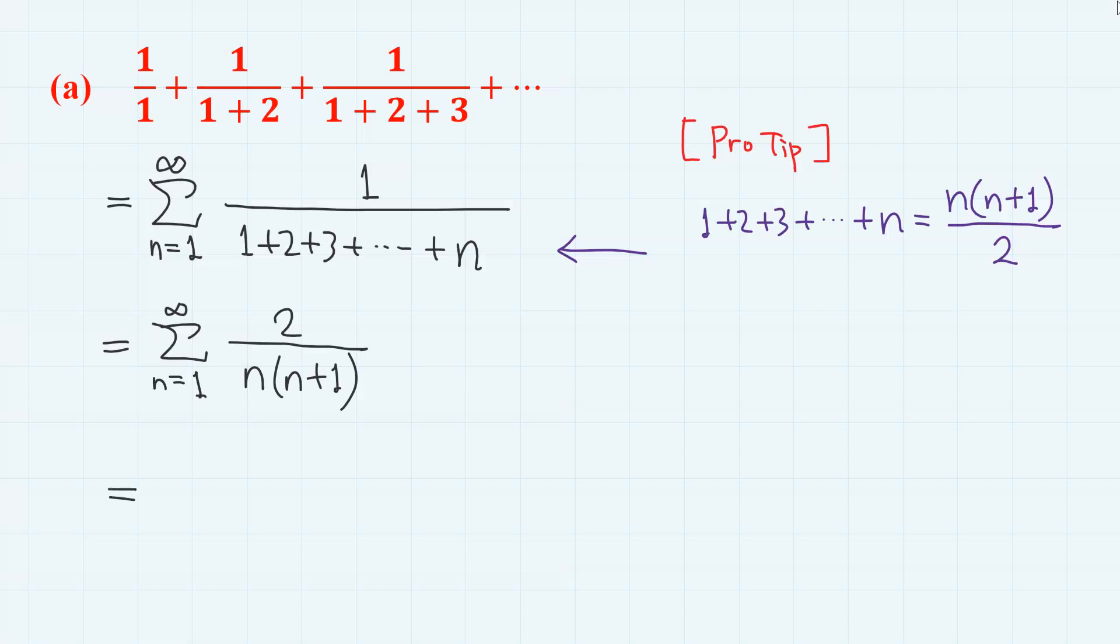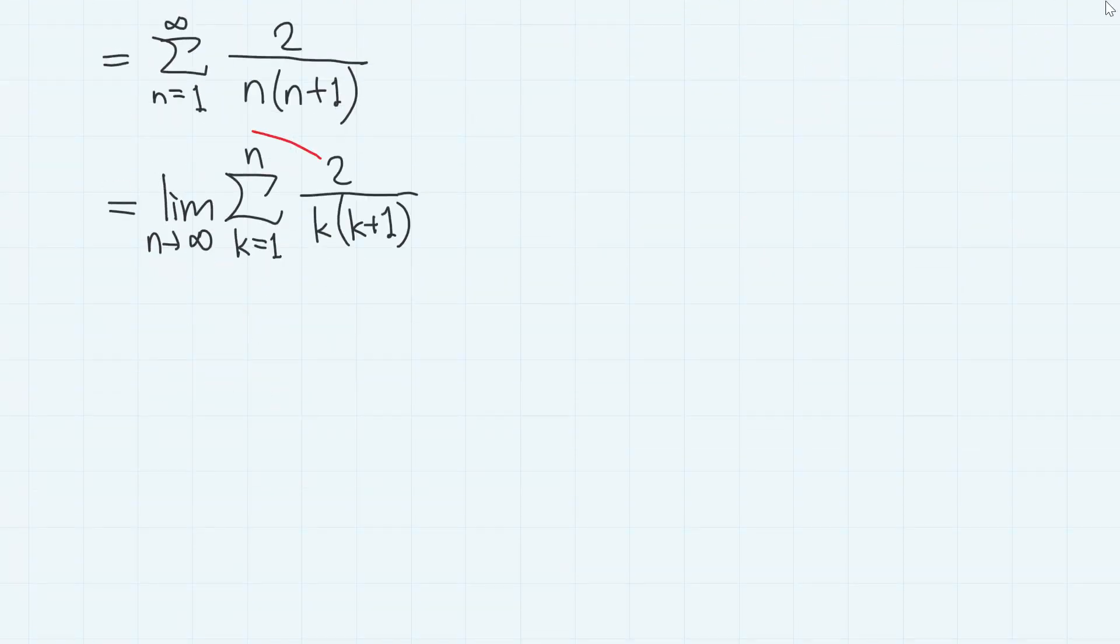The sum of the infinite series is the limit of the partial sum, the sum of 2 over k, k plus 1, from k equals 1 to k equals n, where n goes to infinity. Here, this constant 2 can be taken out to the front.